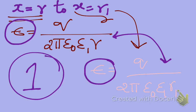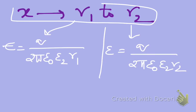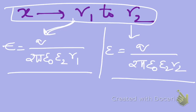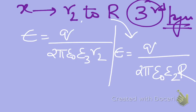For the second layer of insulation, x extends from R1 to R2. At x = R1, E equals Q divided by 2π ε₀ ε2 R1, and at x = R2, E equals Q divided by 2π ε₀ ε2 R2 — using ε2 because this is the second layer. Similarly, in the third layer of insulation, at x = R2, E equals Q divided by 2π ε₀ ε3 R2, and at x = R3, E equals Q divided by 2π ε₀ ε3 R3.